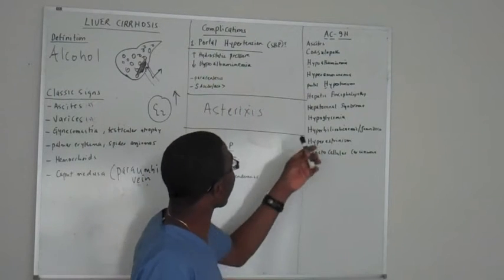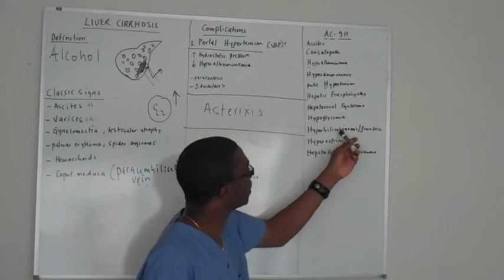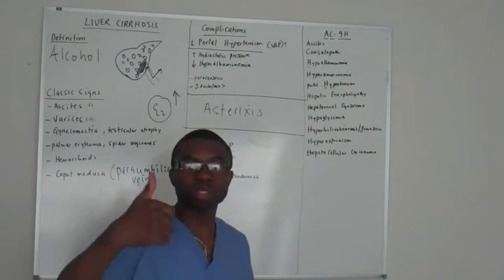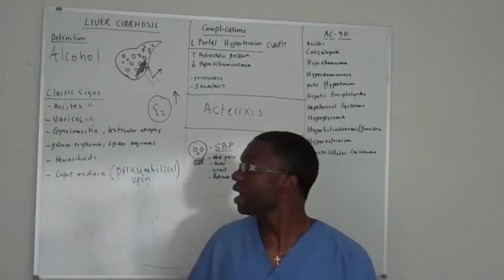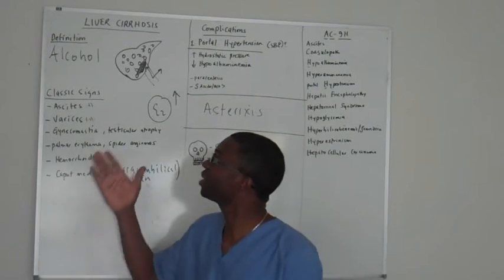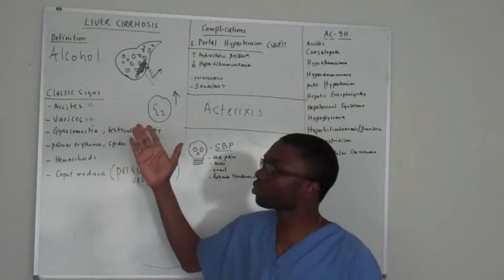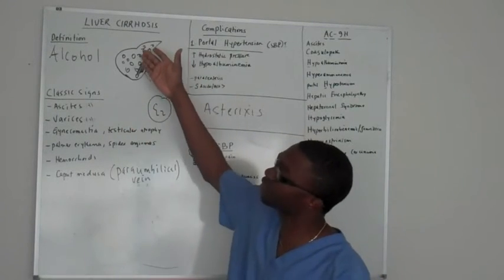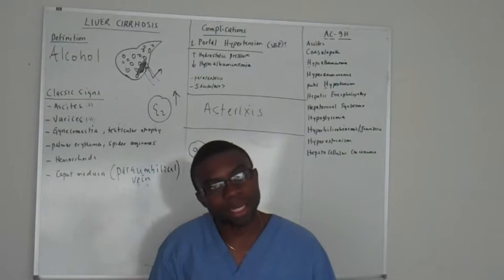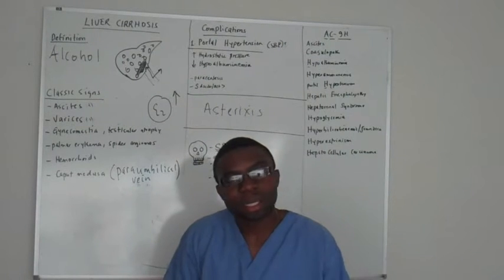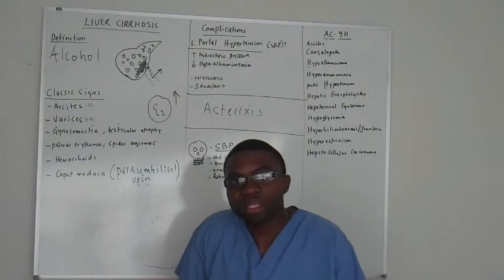Now what happens is your bilirubin goes up because it can't go to the liver. And even if it does go to the liver, the liver is dead. It's like going to a dead man's house.